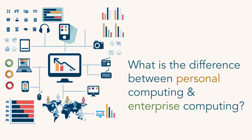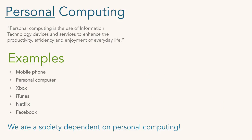We have things like personal computing and enterprise computing. Personal computing — or personal information systems — includes things on your mobile phone, your personal computer, your Xbox, iTunes, Netflix, and Facebook. iTunes is your music, Netflix is the movies you're watching, Facebook is your posts. That's all information created as part of personal computing.